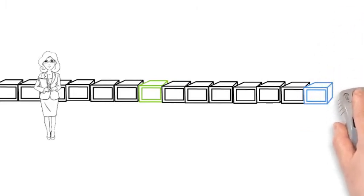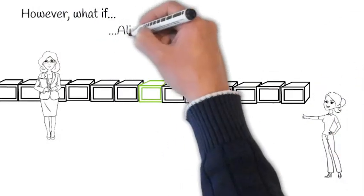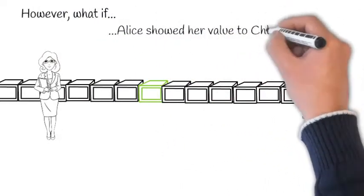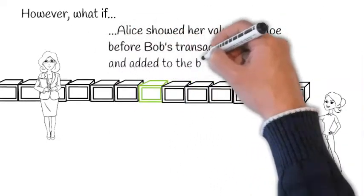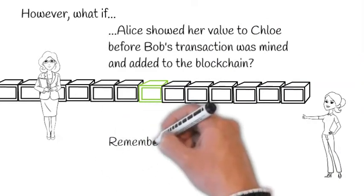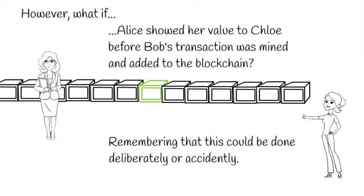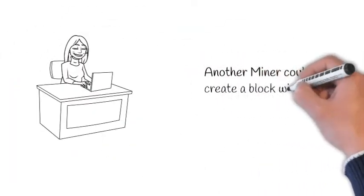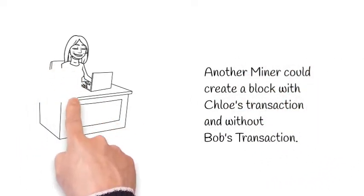At the moment, this looks like everything is sound. However, what if Alice showed her value to Chloe before Bob's transaction was mined and added to the blockchain? Remember that this could be done deliberately or accidentally, but if it was done, another miner could create a block with Chloe's transaction and without Bob's transaction.